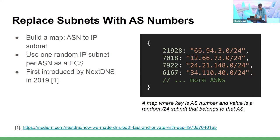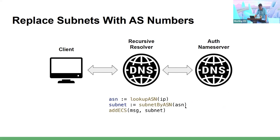So instead, first we build a map where the key is the AS number and the value is some random subnet announced by that AS. Then when you receive a DNS query from a user, you look up the AS number the IP address belongs to — using tools like MaxMind, IP location, etc. Once you've figured out the AS number, you check the map and get the subnet corresponding to that AS number. Finally, you use that subnet in the ECS extension that goes further to the name servers.